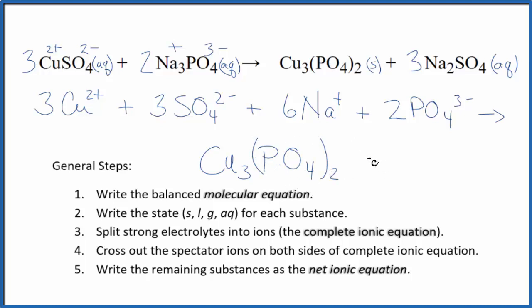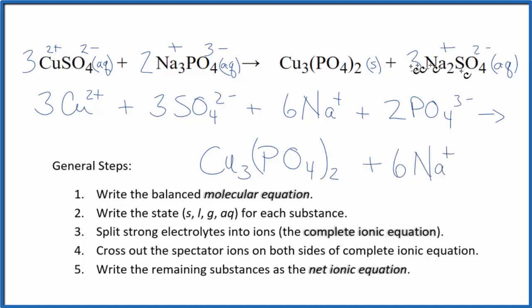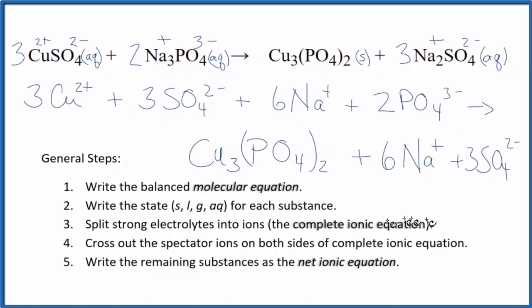Since sodium is 1+ and sulfate is 2 minus, we have 3 times 2 — six sodium ions — and then three sulfate ions on the products side. So this is the complete ionic equation, and we can now cross out the spectator ions. Spectator ions are ions that appear on both sides of the equation unchanged.